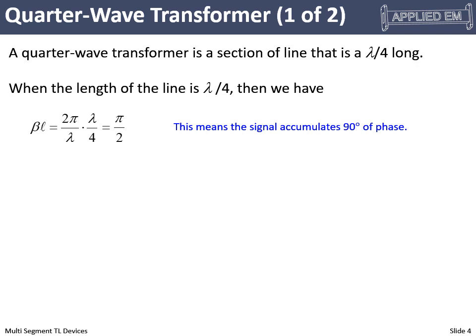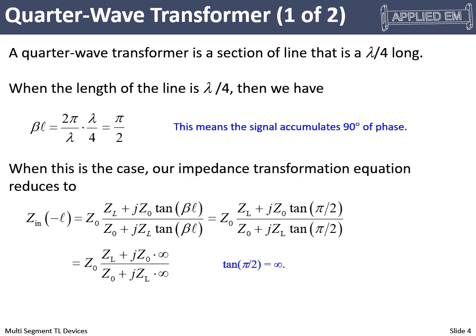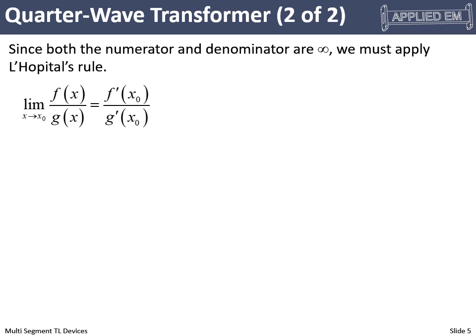Let's think about what the implication of this is. Let's look at our impedance transformation equation and plug in λ/4, so that beta L becomes π/2. We now have tangent of π/2. It turns out the tangent of π/2 is infinity. In order to get an expression, we have to apply L'Hôpital's rule — where each term approaches infinity, we look at the ratio of their first-order derivatives.